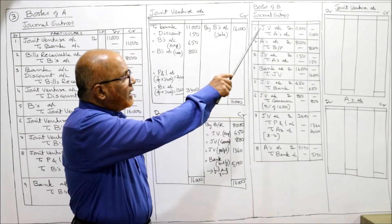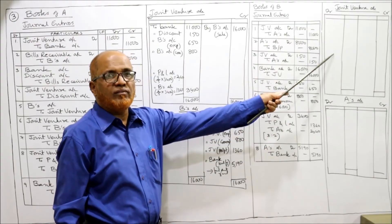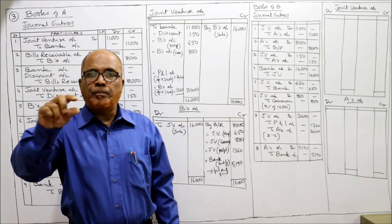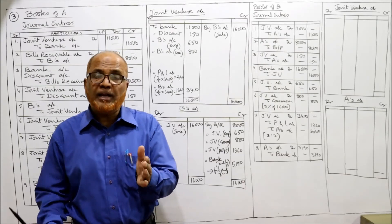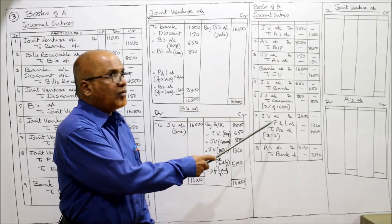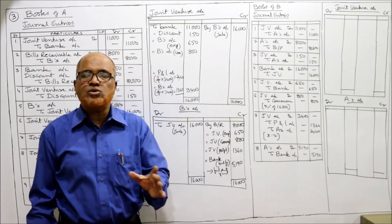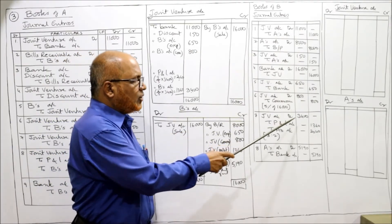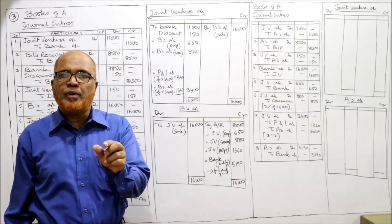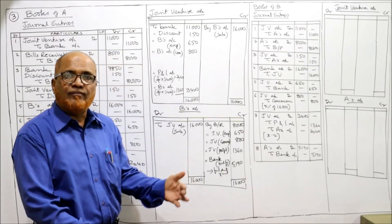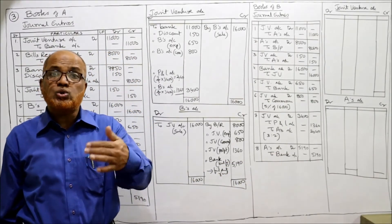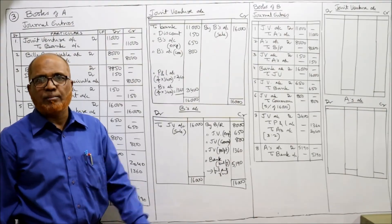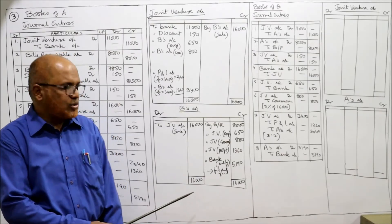Finally, after posting all these entries you will get the balancing figure in joint venture account - profit of 3,400. Entry: Joint Venture Account Dr. to P&L Account and to A's Account. B's profit of 1,360 (2/5 of 3,400) is transferred to P&L account. A's share of profit is 3/5 which comes to 2,040, transferred to A's account. Entry: Joint Venture Account Dr. to P&L Account 1,360, to A's Account 2,040 - being the profit on joint venture shared by the partners.